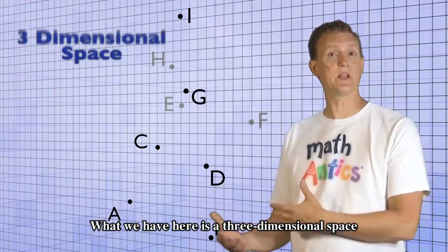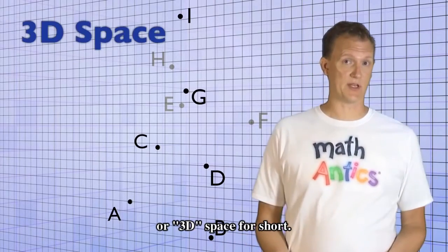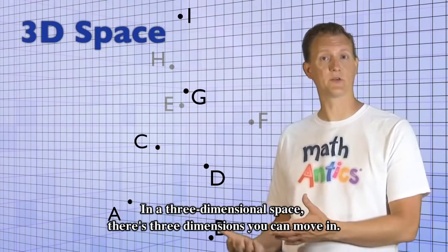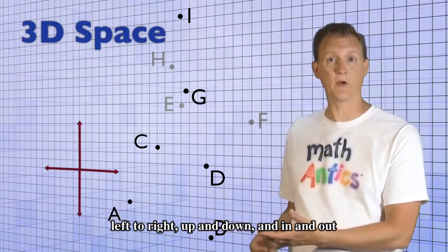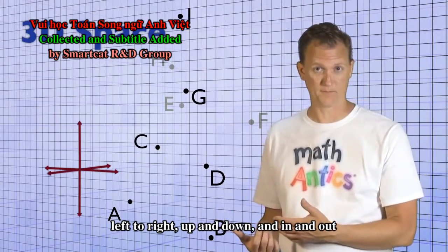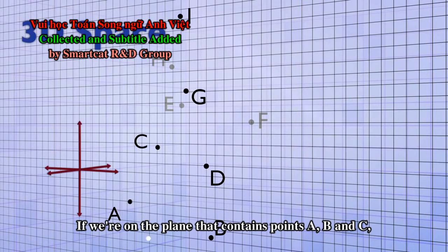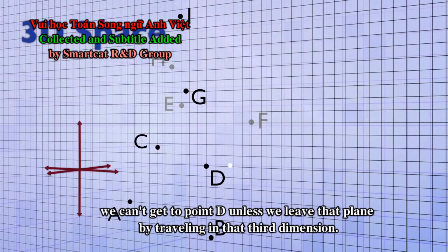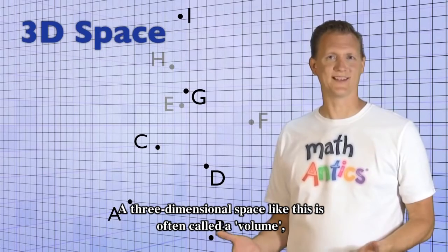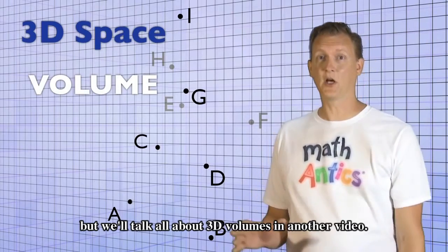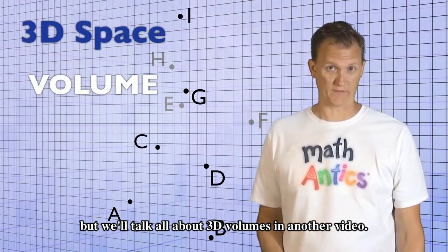What we have here is a three-dimensional space, or 3D space for short. In a three-dimensional space, there's three dimensions you can move in: left to right, up and down, and in and out. If we're on the plane that contains points A, B, and C, we can't get to point D unless we leave that plane by traveling in that third dimension.